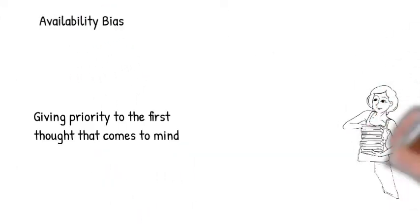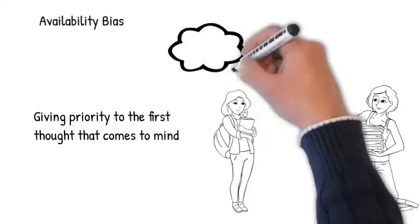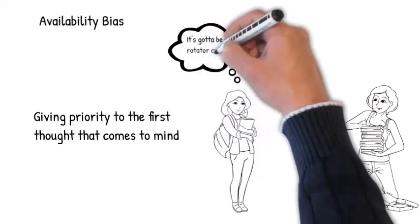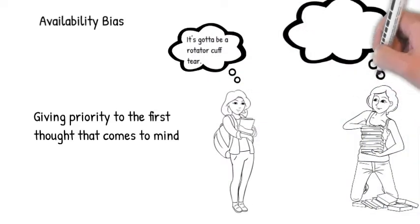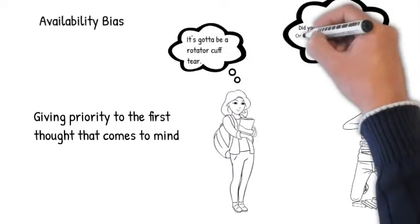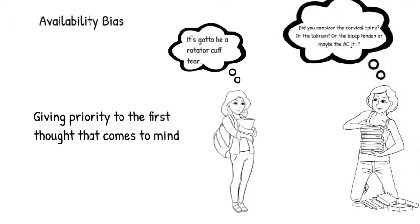Availability bias refers to giving priority to the first thought that comes to mind. This type of bias may be stronger in clinicians with a narrower experience base who have less exposure to alternative diagnoses or treatment approaches. It is very difficult to consider things which we do not have knowledge of. To minimize the influence of availability bias, make sure to carefully research your decision and ask experts for guidance and feedback.